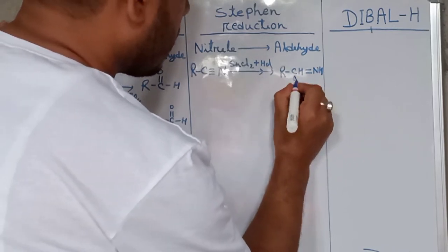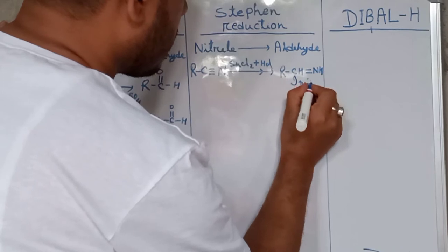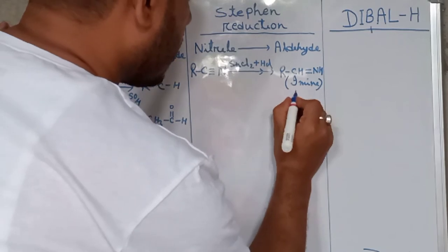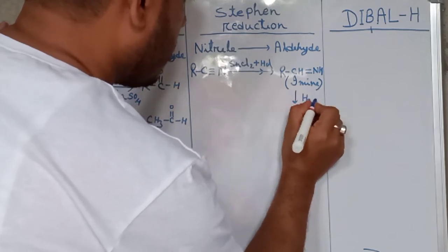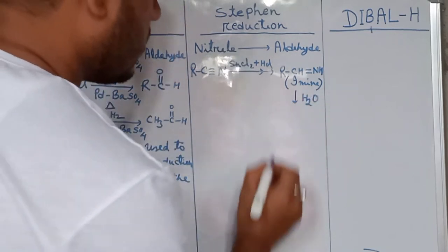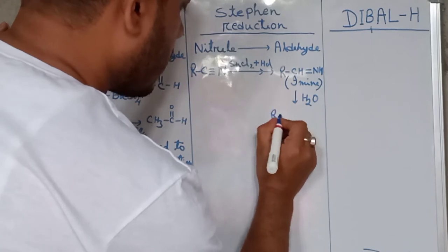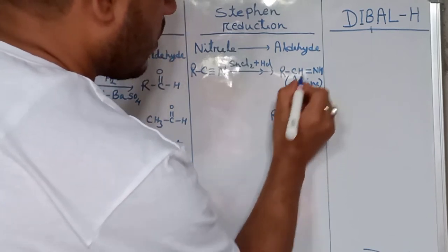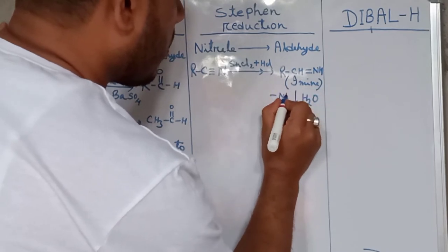After that, it undergoes hydrolysis. This is called imine. Addition of 2H in RC≡N gives imine, which is then hydrolyzed with H2O to give aldehyde RCHO with removal of ammonia.